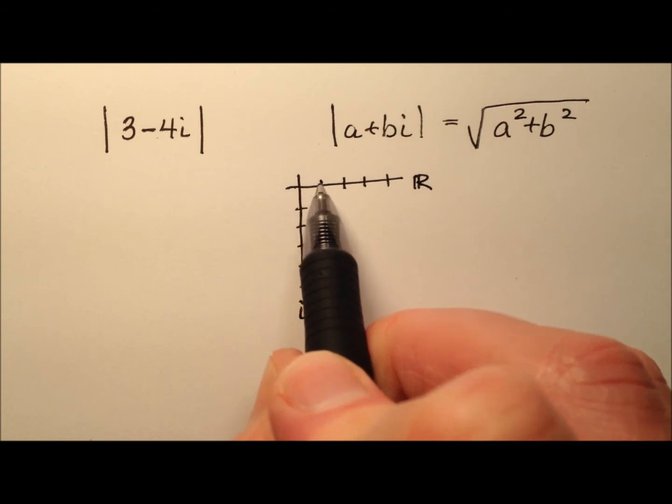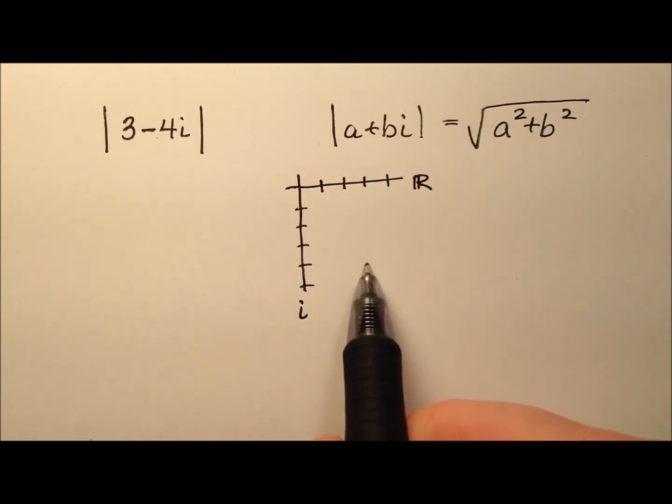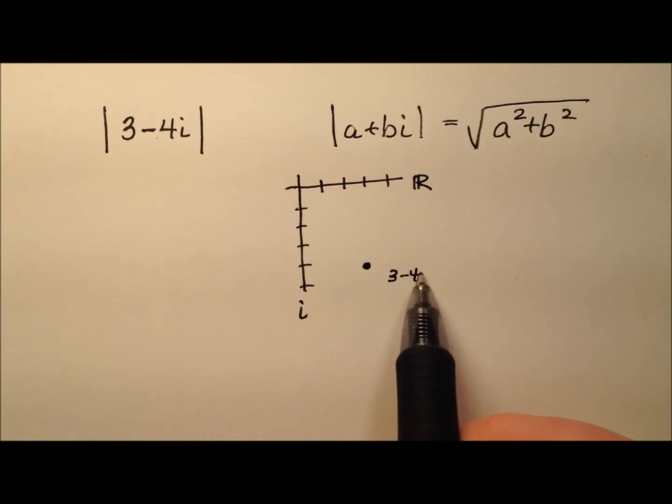So 3 minus 4i will be 3 units over, 4 units down, and we have this point, 3 minus 4i.